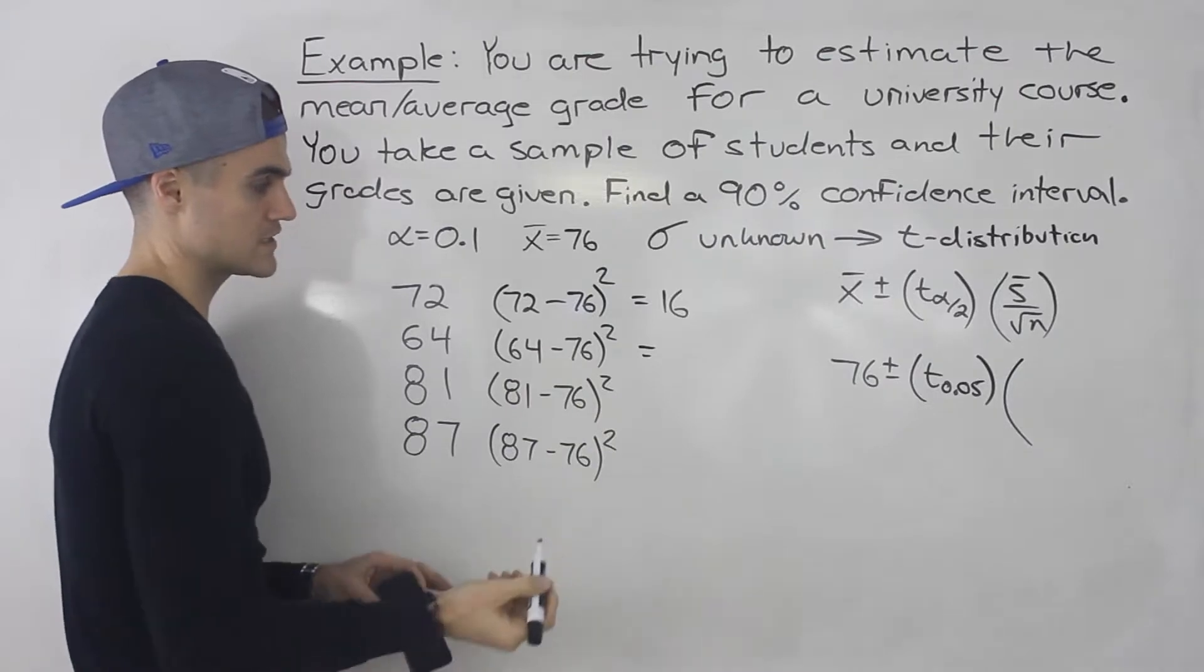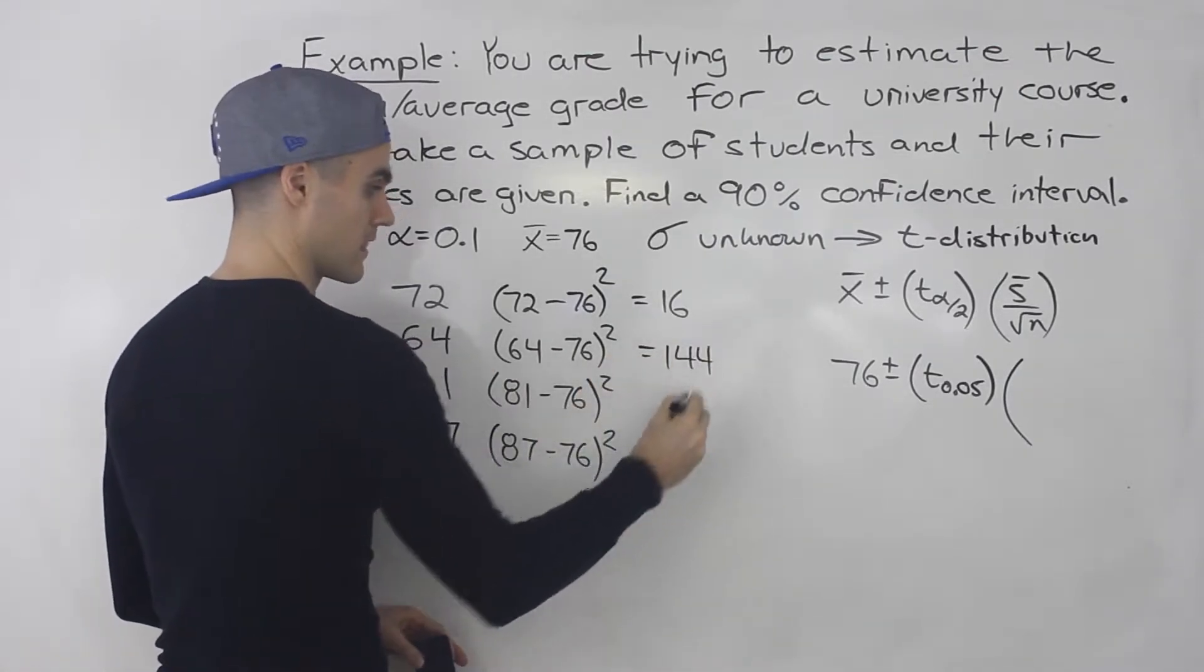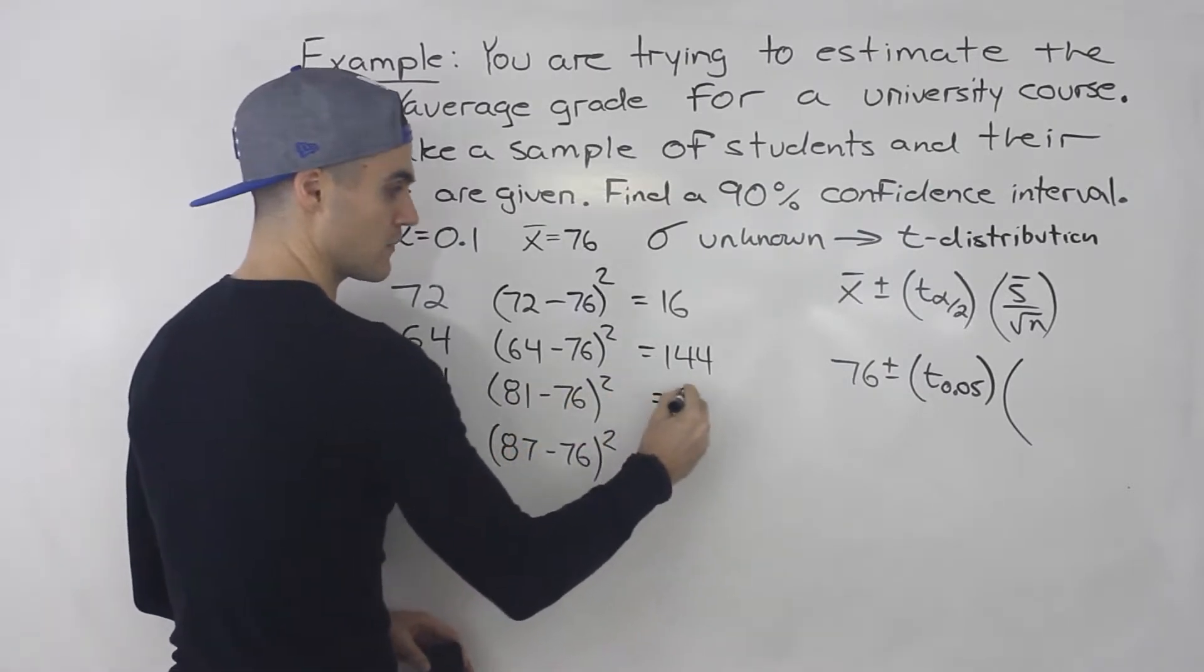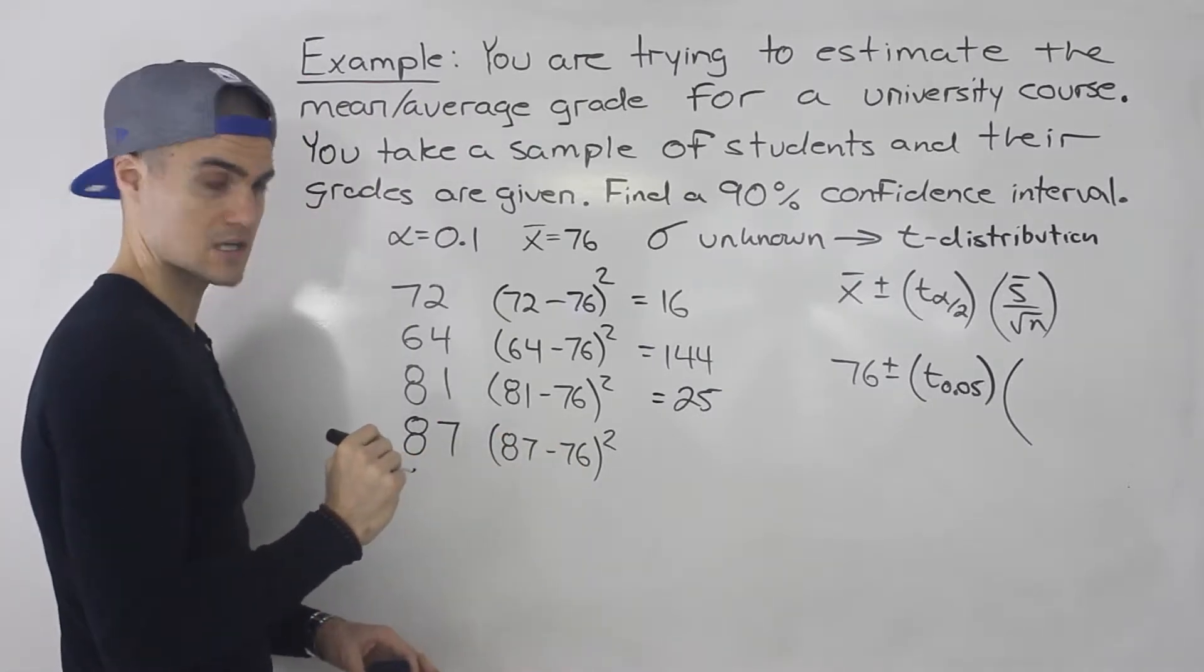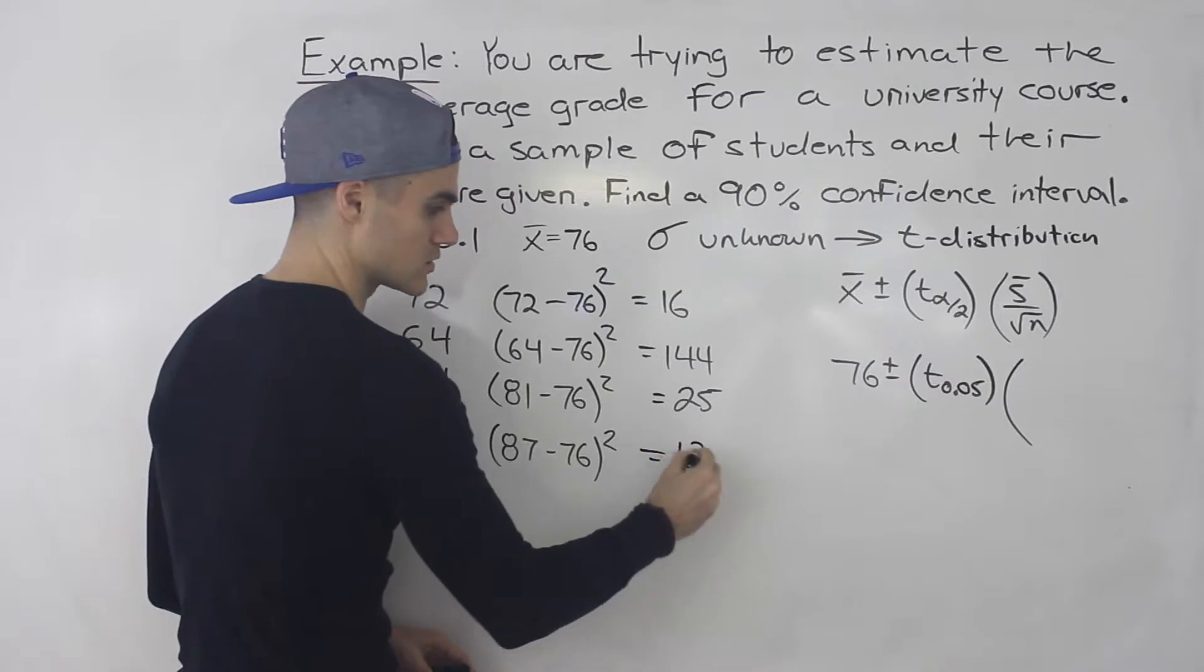Then you're going to have 64 minus 76, which is negative 12. Squared gives us 144. 81 minus 76, that would give us 5. 5 squared is 25. And then 87 minus 76, that would give us what? 11. And then 11 squared is 121.